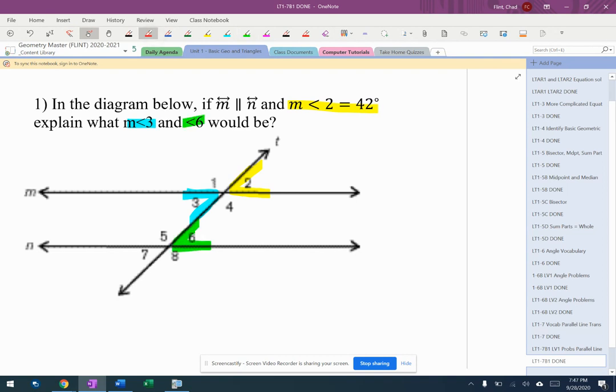Angle 2 and angle 3 are the same because they're vertical. So angle 3 is 42 because it's vertical.